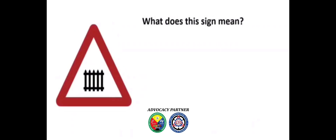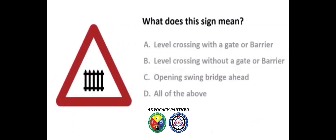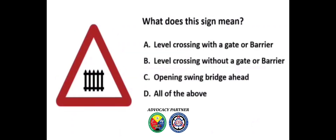What does this sign mean? A) Level crossing with a gate or barrier, B) Level crossing without a gate or barrier, C) Opening swing bridge ahead, D) All of the above. Answer: A) Level crossing with a gate or barrier.